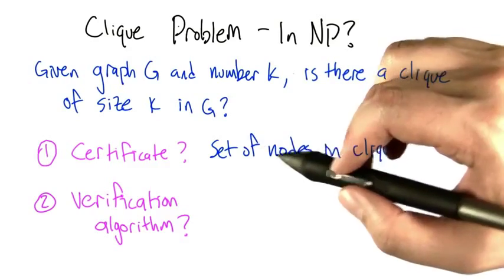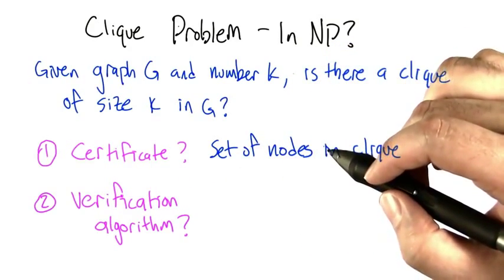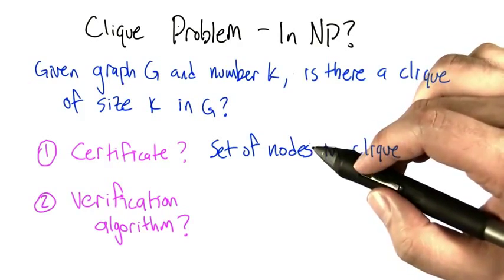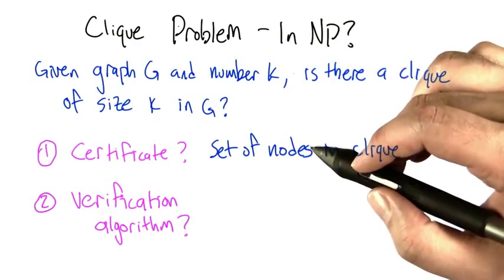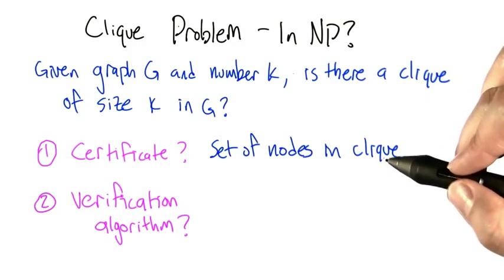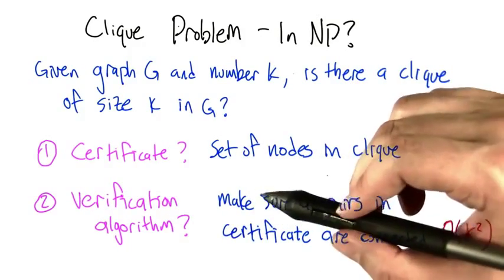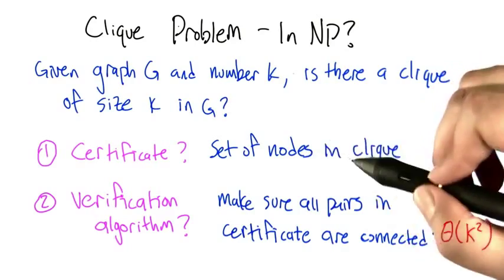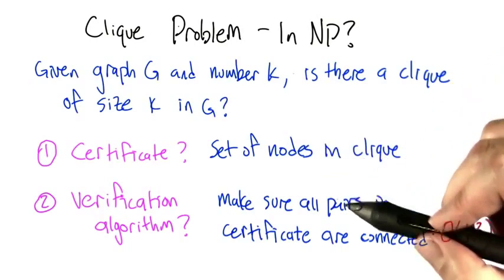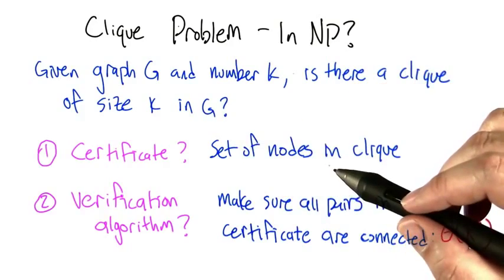You should by now have a sense that the certificate in this case is actually pretty straightforward. If I tell you that there's a 4-clique in the graph, the way I can convince you that there's one there is I'd give you the 4 nodes that make up the clique. The verification algorithm that you run is you go through all the pairs of nodes in the certificate and make sure that in the original graph G they're actually connected.